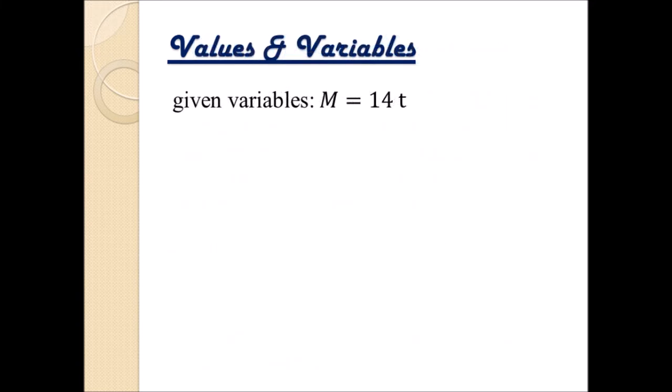As always let's first put down all the given variables and values. We have given the mass M of the empty freight cars which have each a mass of 14 tons. In order to convert this into a basic unit we have to multiply this value with 1000 yielding M equals 14,000 kilograms. In addition, we have given the mass m of 20 tons of the load which equals 20,000 kilograms. In addition we have given the height h of 3 meters which the two freight cars reach together.